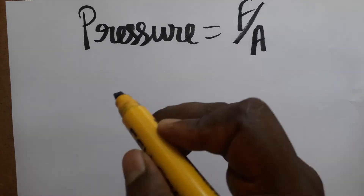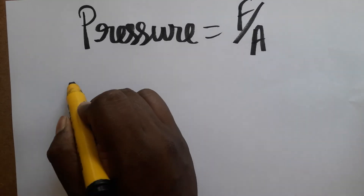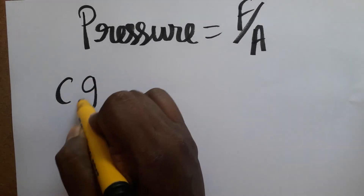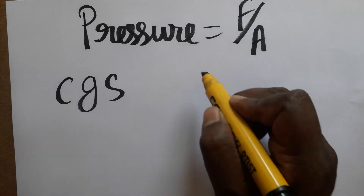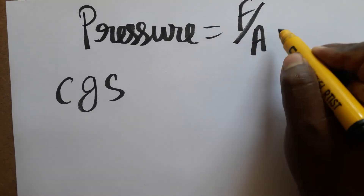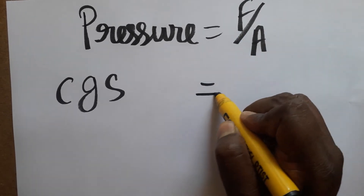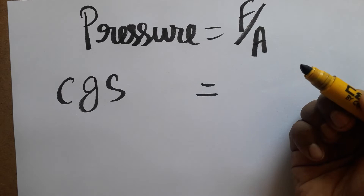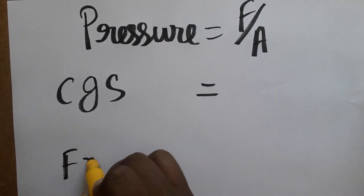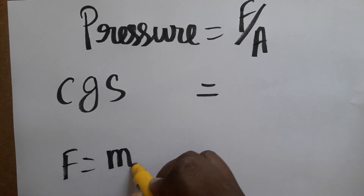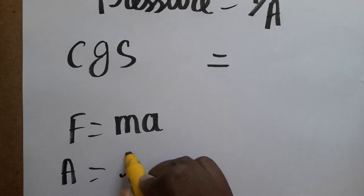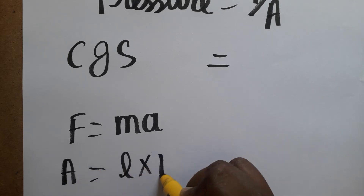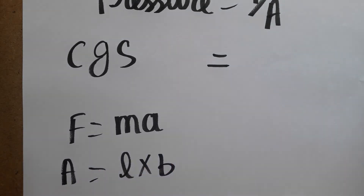Hello students, today we are going to see pressure unit in the CGS system — centimeter, gram, second. Pressure is force per unit area. Force is equal to mass into acceleration, and area is equal to length into breadth or pi r squared.